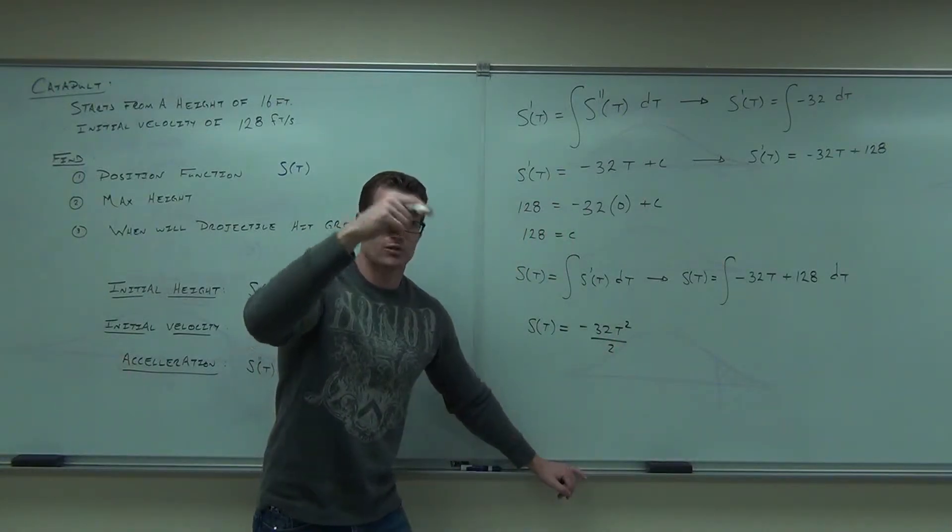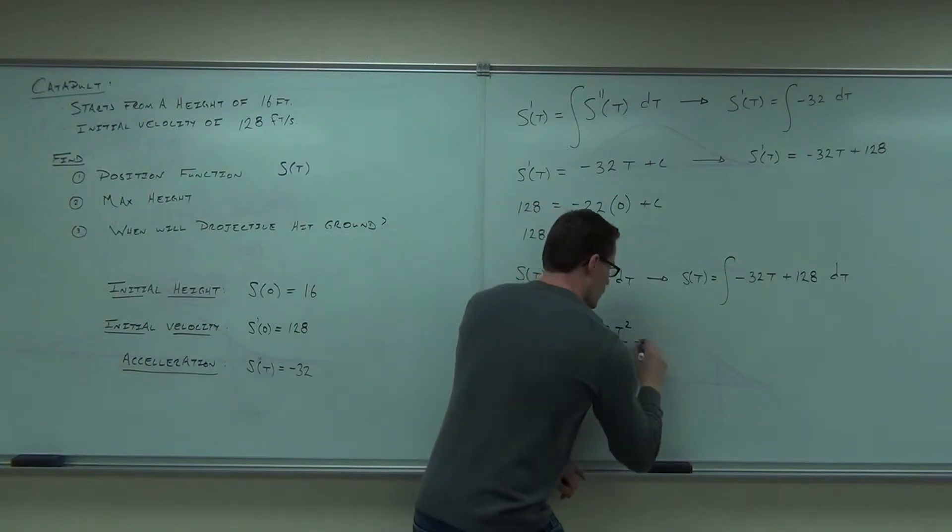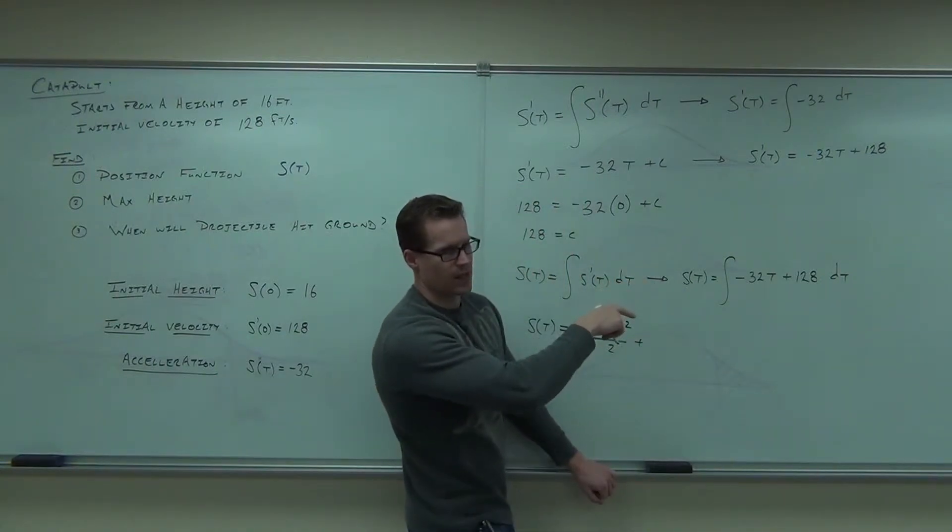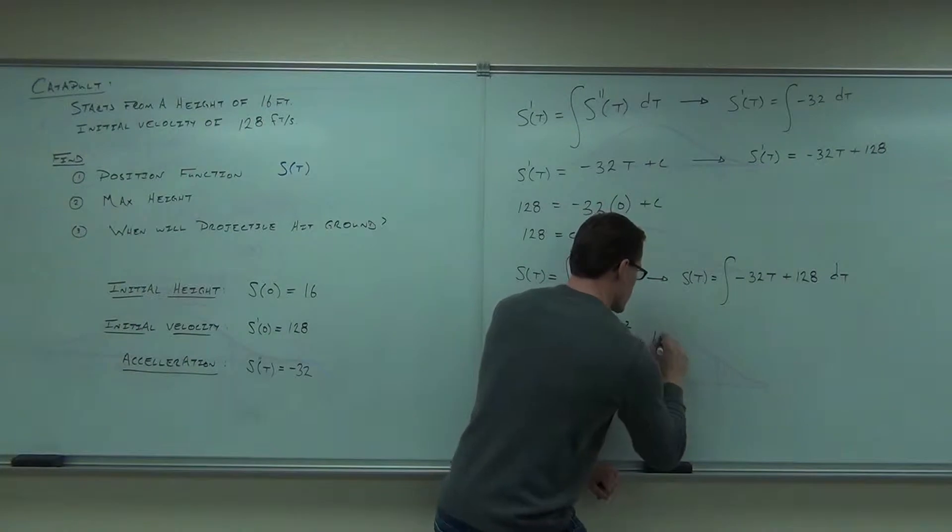I'm going to take an integral. I'm adding 1 to the exponent, dividing by the new exponent. Plus, don't forget about that 128. That doesn't go to 0. That's not a derivative, it's integral. So 128t plus C.